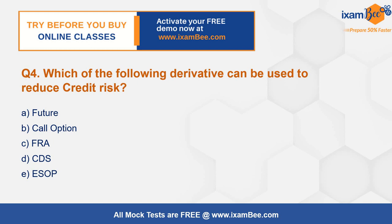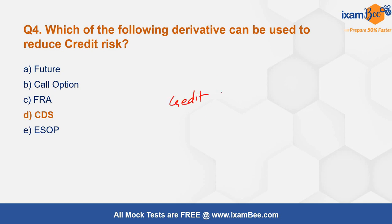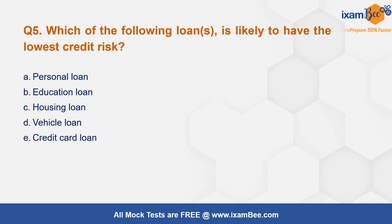Next question: which of the following derivatives can be used to reduce credit risk? The correct answer is CDS — Credit Default Swap. CDS is a kind of derivative. In layman's language, it is like taking insurance on your credit, where a third party buying this product ensures that if the borrower defaults, they will pay up in place of the borrower. As for which of the following loans is likely to have the lowest credit risk — you can write your answer in the comments box.